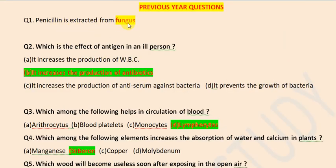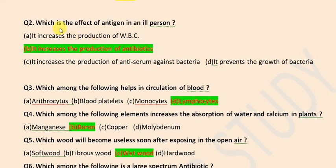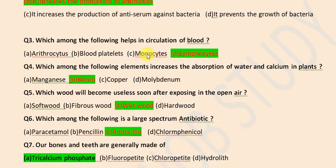Penicillin is extracted from fungus. Which is the effect of antigen in ill persons? It increases the production of antibiotics.